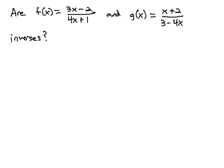In this video, we're going to try and decide if these two functions are inverses. We have f of x equals 3x minus 2 over 4x plus 1, and g of x equals x plus 2 over 3 minus 4x.